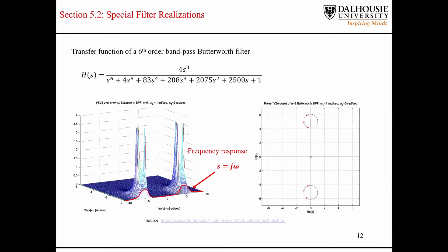Here's a sixth-order Butterworth bandpass filter example. It has three zeros located in the center of the S-plane, three poles in the top half and three poles in the bottom half. You can see how those pole locations determine the shape of the surface, and what it does to the line where S equals jω — giving a standard bandpass filter plot with a center frequency.